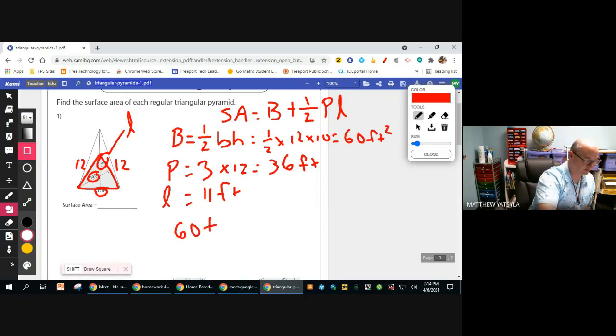plus one-half times 36 times 11. So 0.5 times 36 by 11, to get us 198,